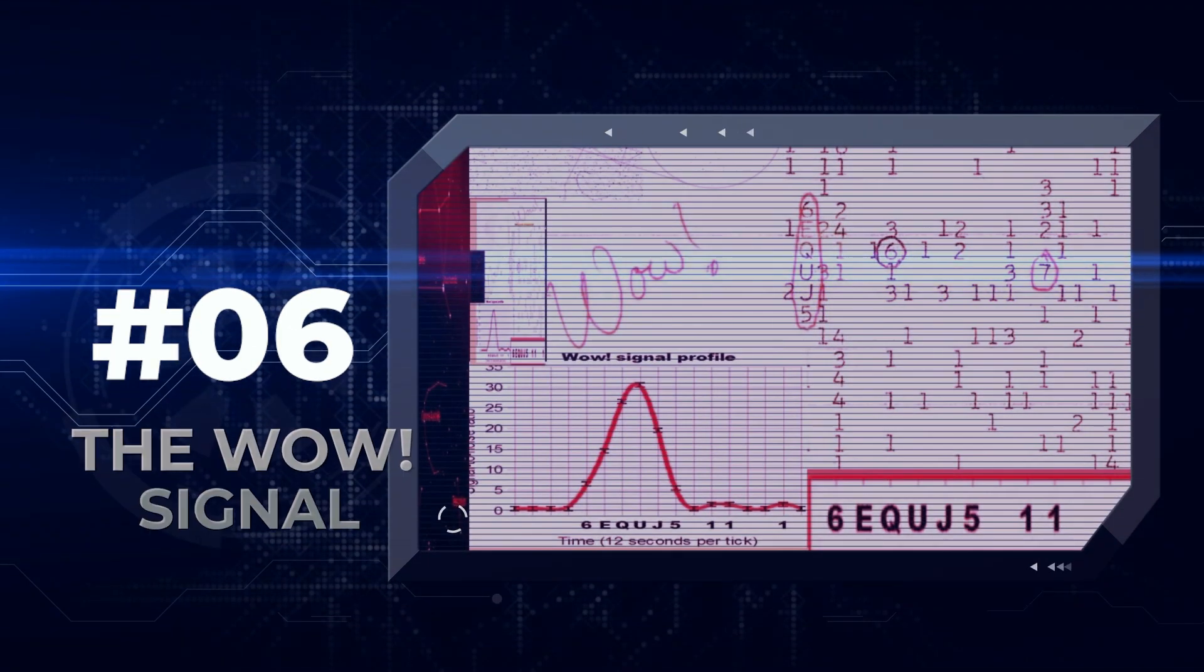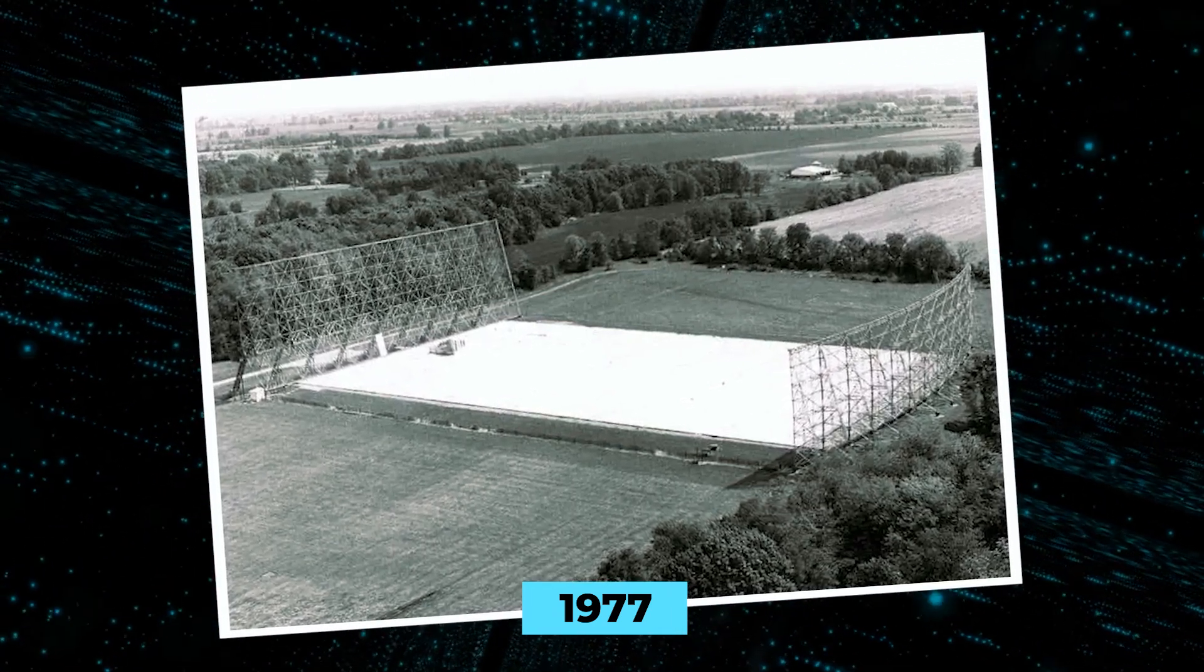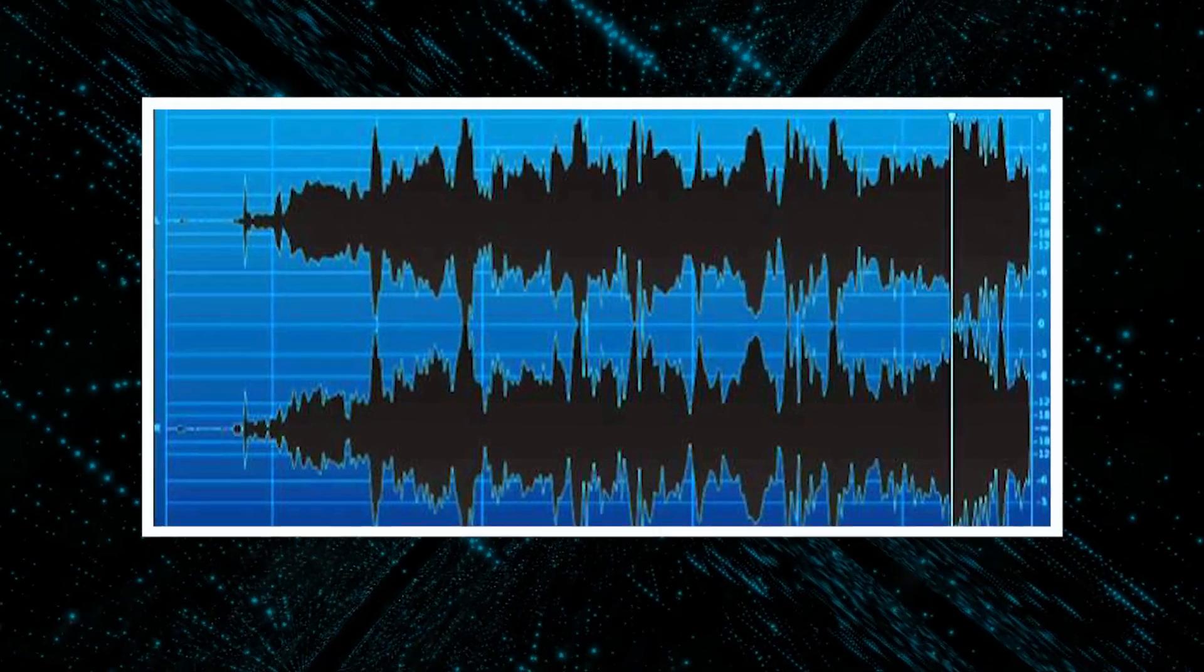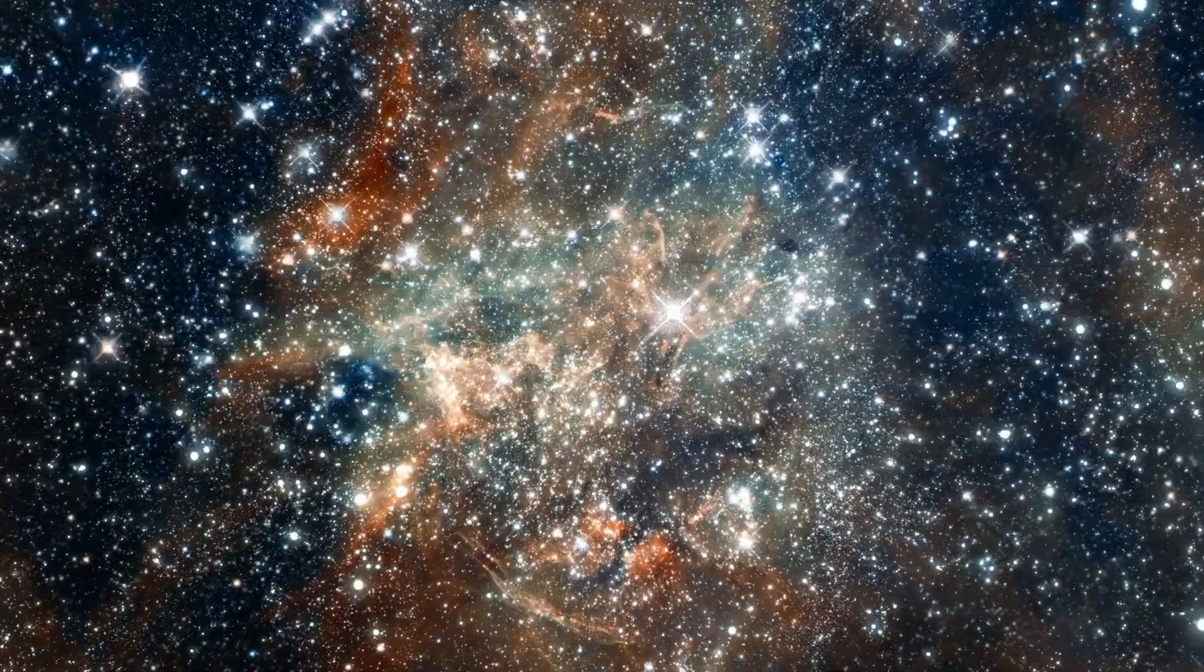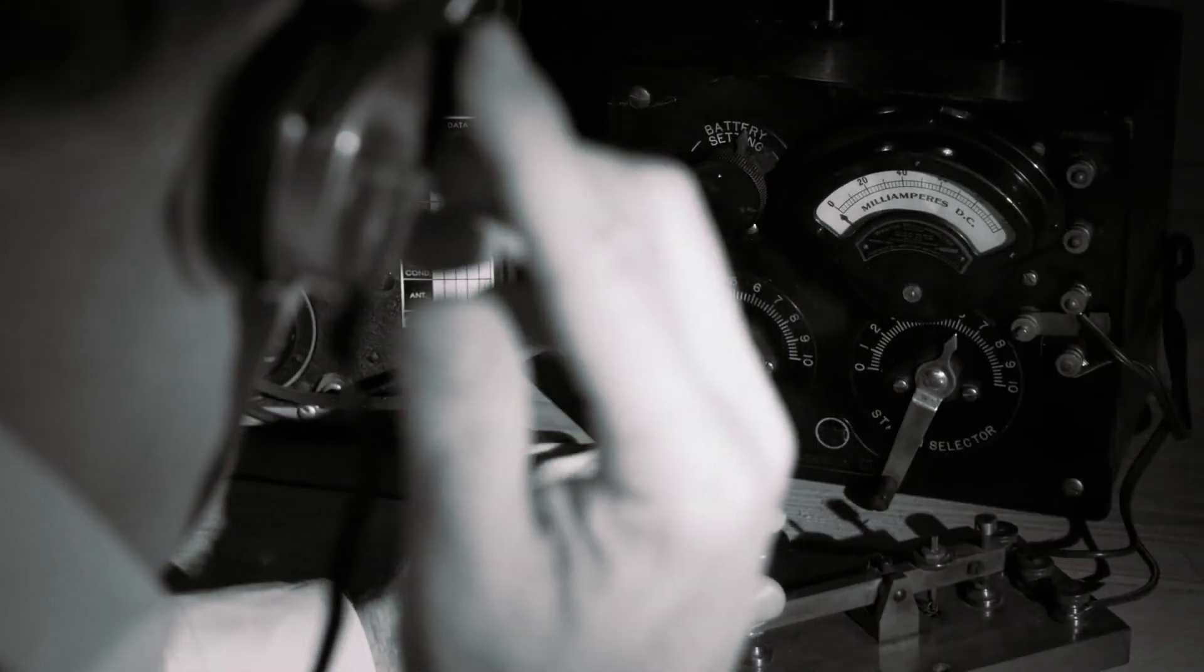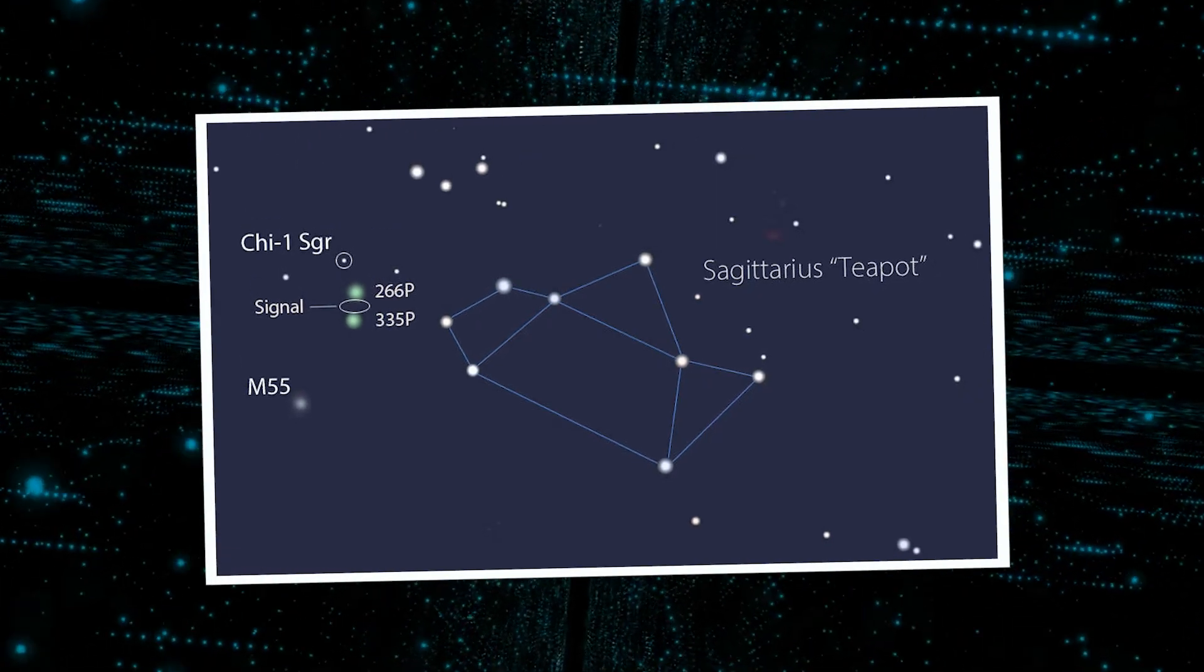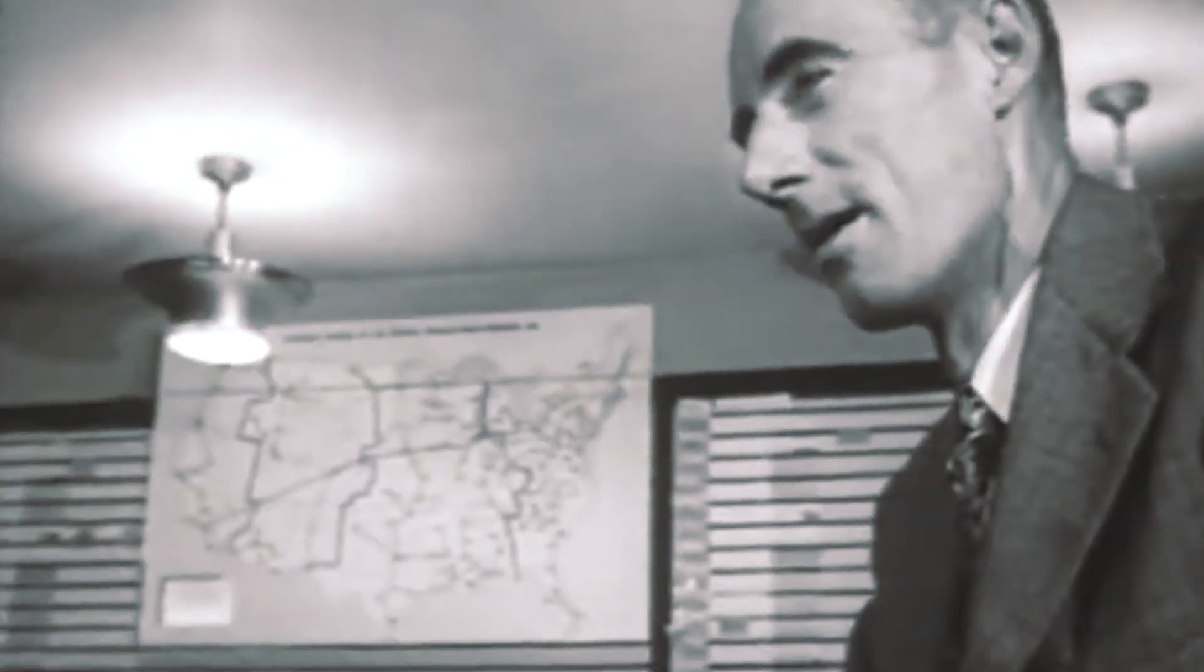Number 6 – The WOW Signal. In 1977, a radio telescope nestled in Ohio's peaceful expanse captured something remarkable – a strong and unprecedented signal that lingered for an incredible 72 seconds. Astonished by this celestial mystery, the astronomer who witnessed it couldn't help but explain WOW on the printout. This signal, which emerged from the depths of the constellation Sagittarius, defied conventional explanation, leaving experts perplexed and captivated.